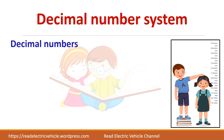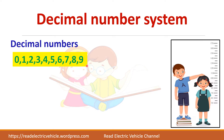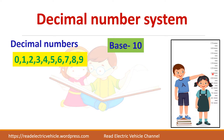First, let us see about the decimal number system. We know decimal numbers vary from 0 to 9, so totally 10 numbers are there. We call the base of this decimal number system 10. For example, to measure height, I can say it is 100 cm, 110 cm, or 102.3 cm — so I can have a fractional part also.